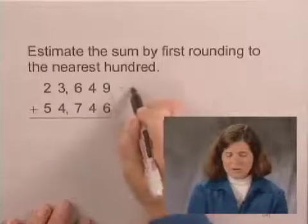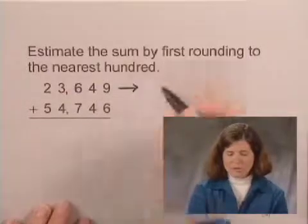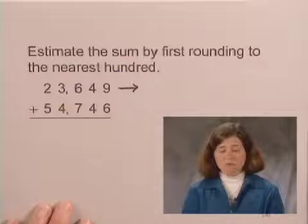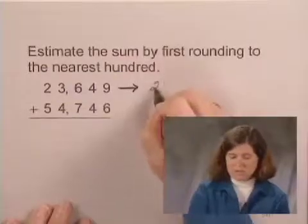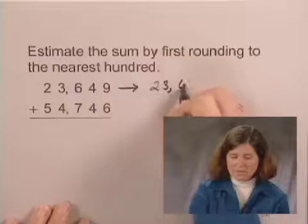So we will estimate, first of all, we will round 23,649 to the nearest hundred. This rounded to the nearest hundred is 23,600.